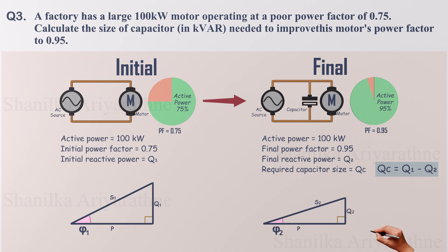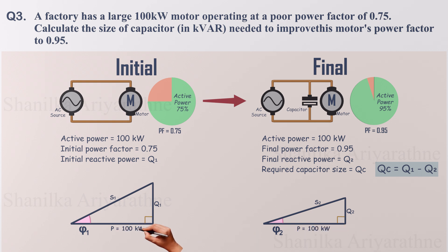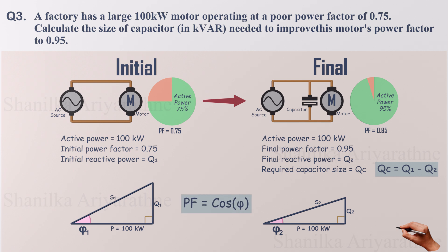We already know one side of the triangle: our active power. With this known, we just need one more parameter to solve the entire triangle. Fortunately, we have power factors for both scenarios: 0.75 and 0.95. Since power factor equals the cosine of the phase angle, we can work backwards to find our angles. Once we have these angles, we can calculate everything else we need.